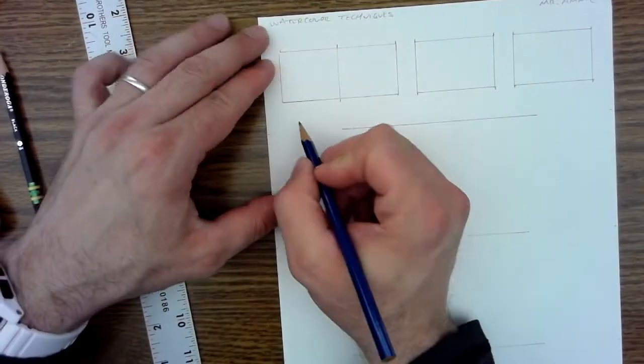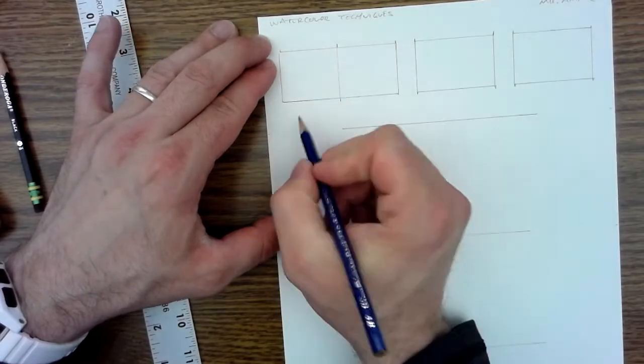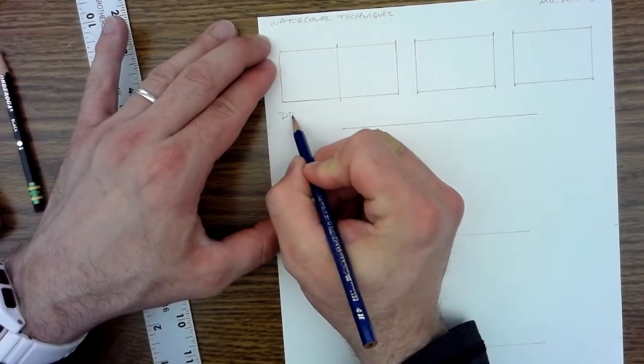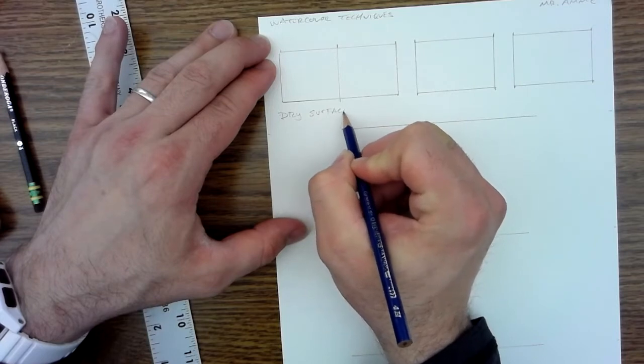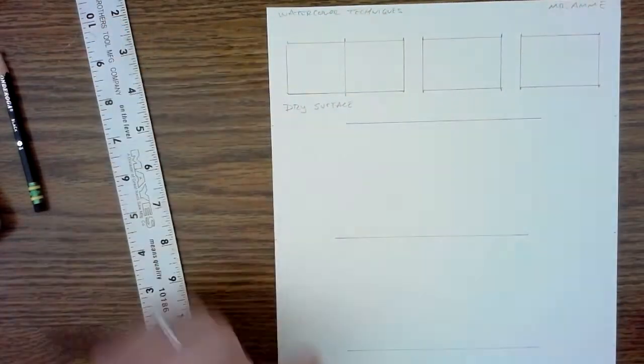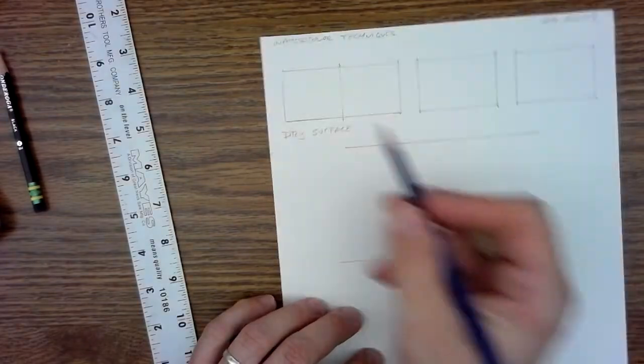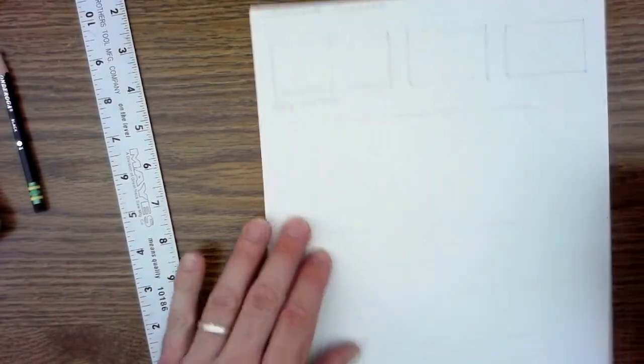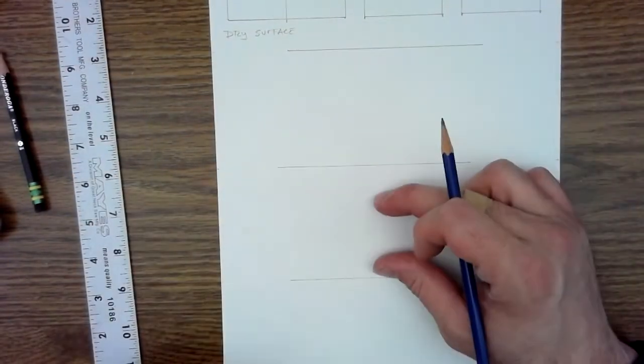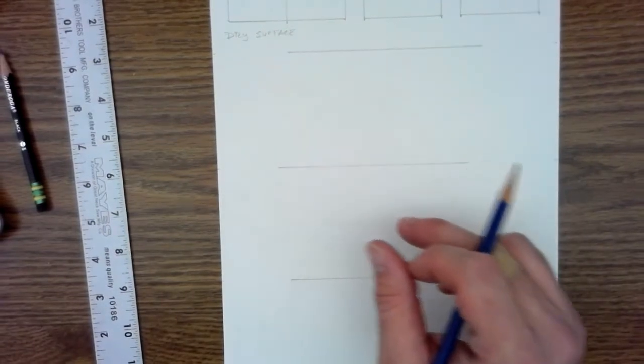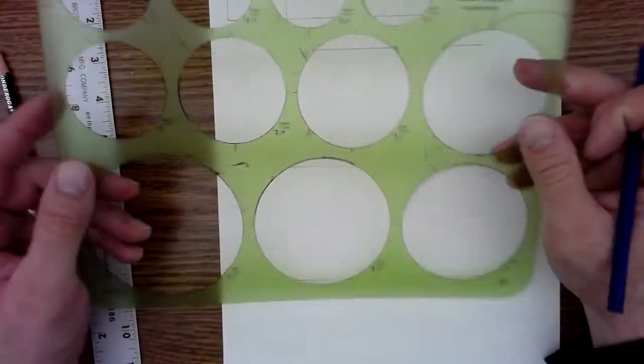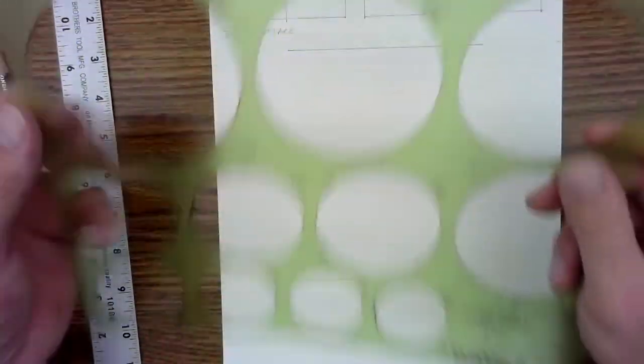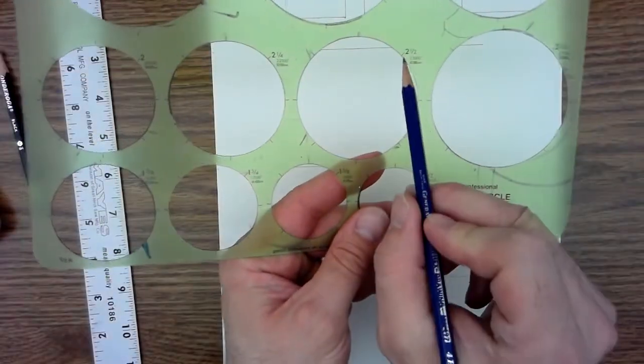This section is going to be all about dry surface. So I'm going to write that below. Dry surface. I'm going to label them after I finish creating all the shapes. In the next two sections, I'm going to be creating three circles. The circles, I'm going to use the circle template. And I'm going to use a two and a half inch circle.